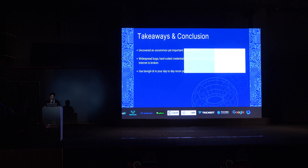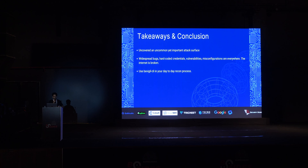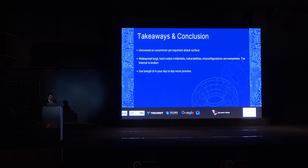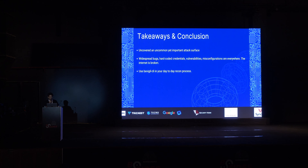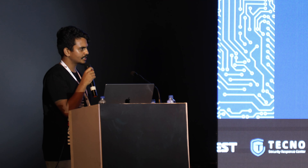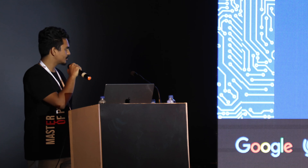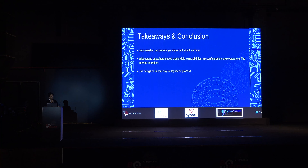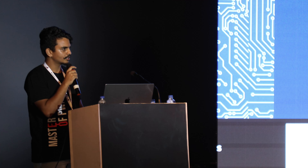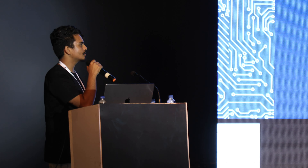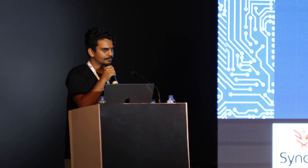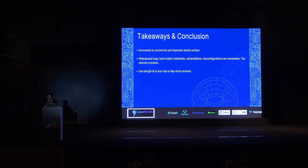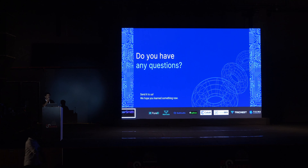With that we move to takeaways and conclusion. In this research, we tried to uncover a very uncommon yet very important attack surface — mobile application attack surface — which many researchers tend to ignore unless it is mentioned in scope. Looking at the number of API keys and misconfigurations discovered, it is safe to say that hard-coded credentials, vulnerabilities, and misconfigurations are everywhere — the internet is broken. The only way to fix all these issues is through collaboration of security researchers and engineers. We encourage all security researchers to utilize the B-Vigil CLI or OSINT API in their daily enumeration process to power up their recon. Thank you.